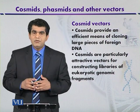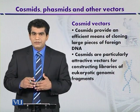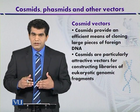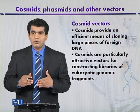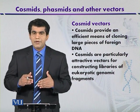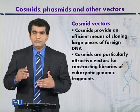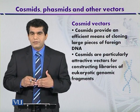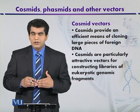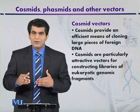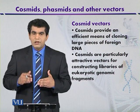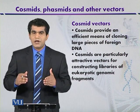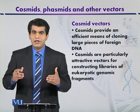Cosmid vectors have certain advantages. One advantage is that they can clone comparatively larger DNA fragments. As compared to plasmids or lambda genomes, the size of the genomic library will therefore be very small, which makes it easier to screen and find the gene of interest.